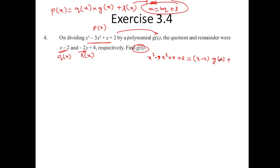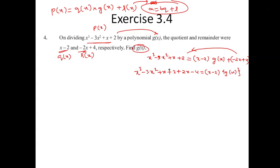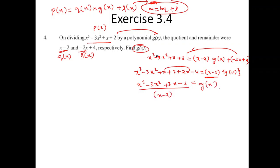G of X equation: x³ minus 3x² plus x plus 2 equals (x minus 2) times G of X plus (minus 2x plus 4). Shifting the remainder to the other side: x³ minus 3x² plus 3x minus 2 equals (x minus 2) times G of X. So I divide x³ minus 3x² plus 3x minus 2 by x minus 2.